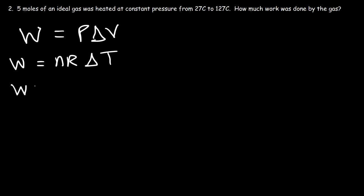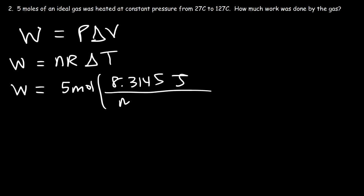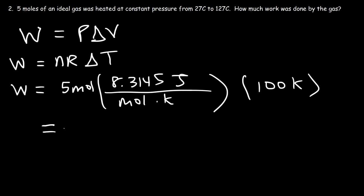In this example n is 5 moles, R is 8.3145 joules per mole per Kelvin, and the change in temperature is 127 minus 27, which is 100°C, also equal to a temperature difference of 100 Kelvin. If you convert these Celsius temperatures into Kelvin and subtract them, the change will still be 100 Kelvin. So 5 times 8.3145 times 100 equals 4,157 joules.